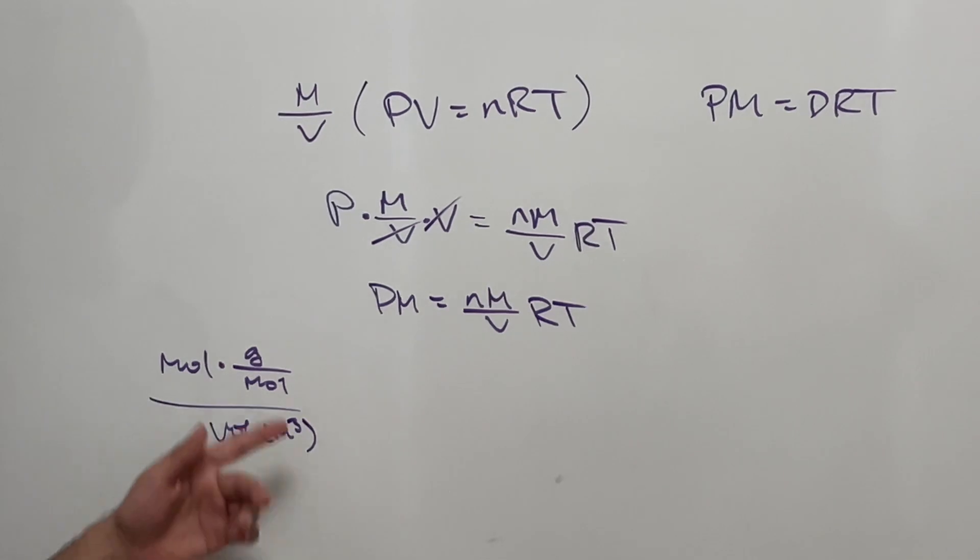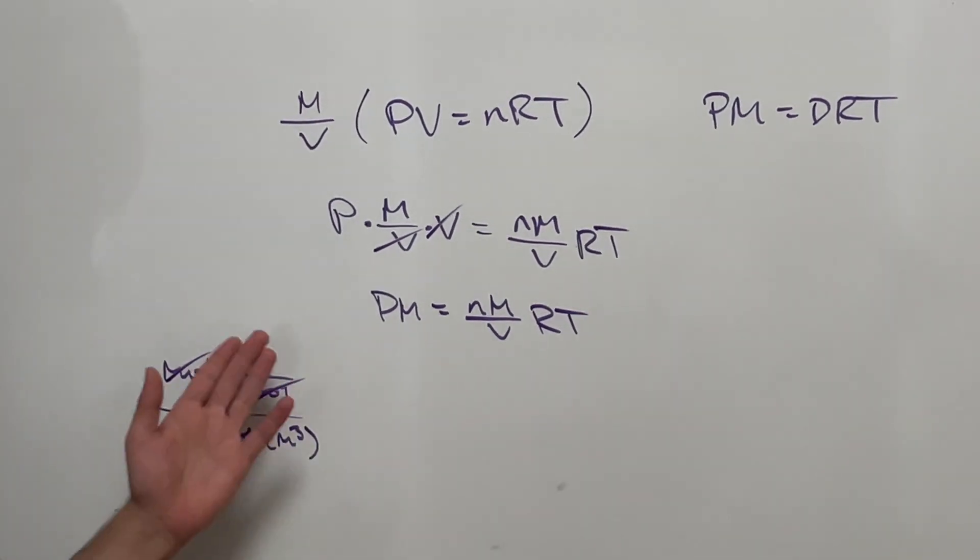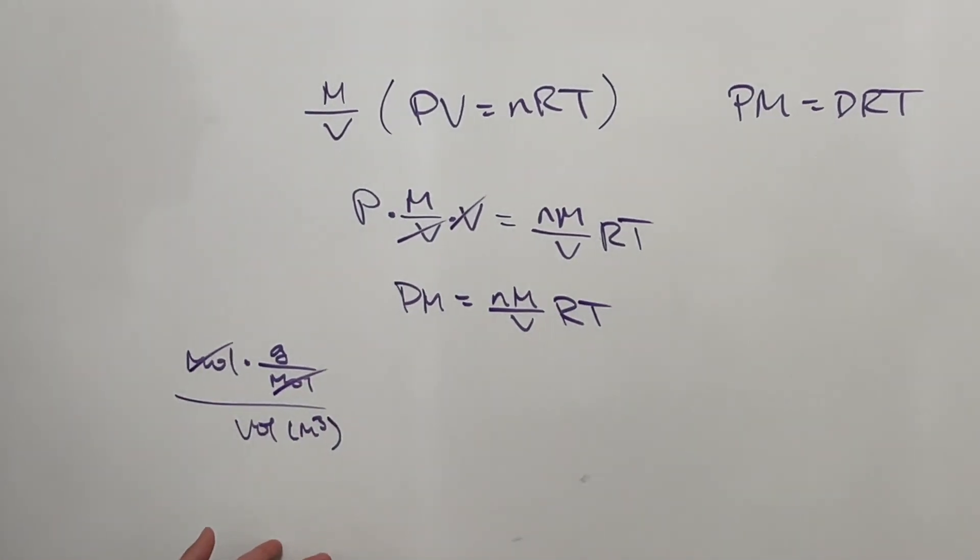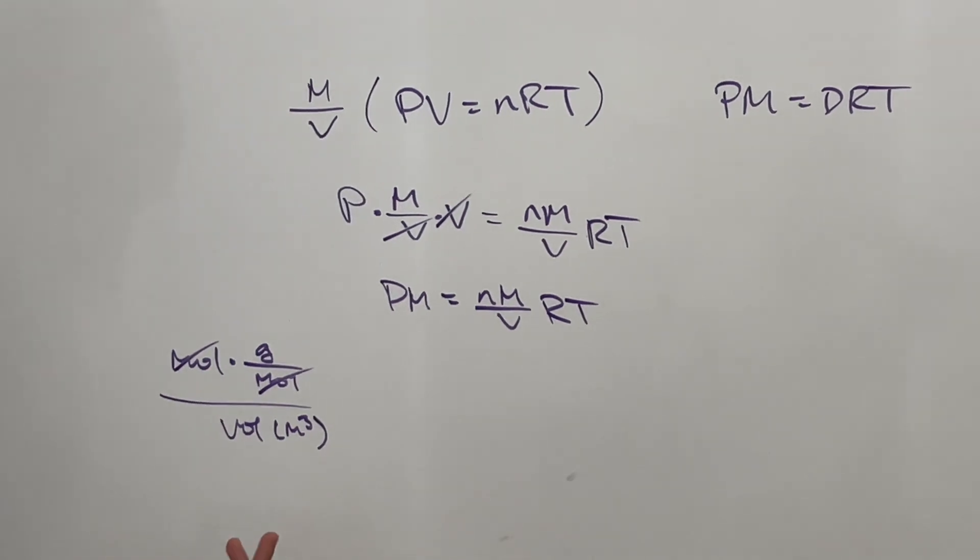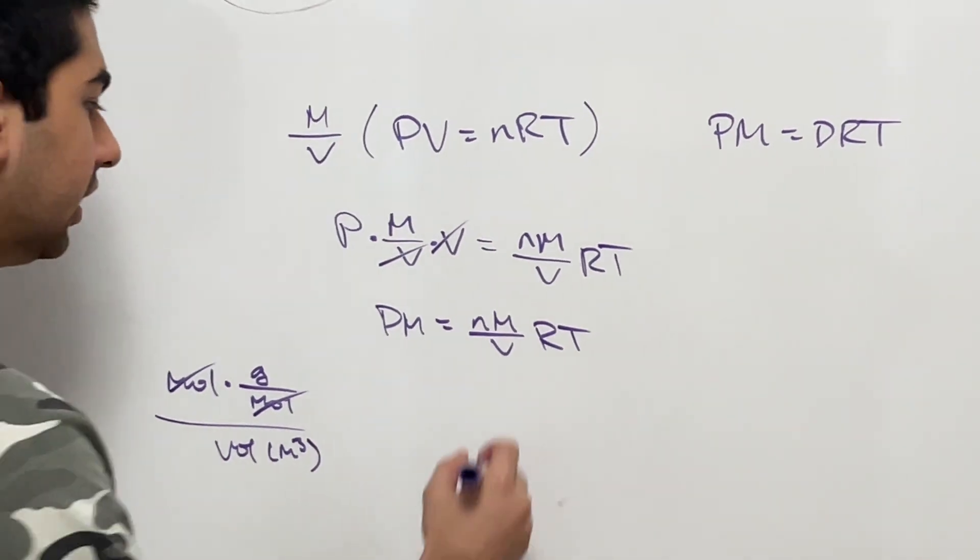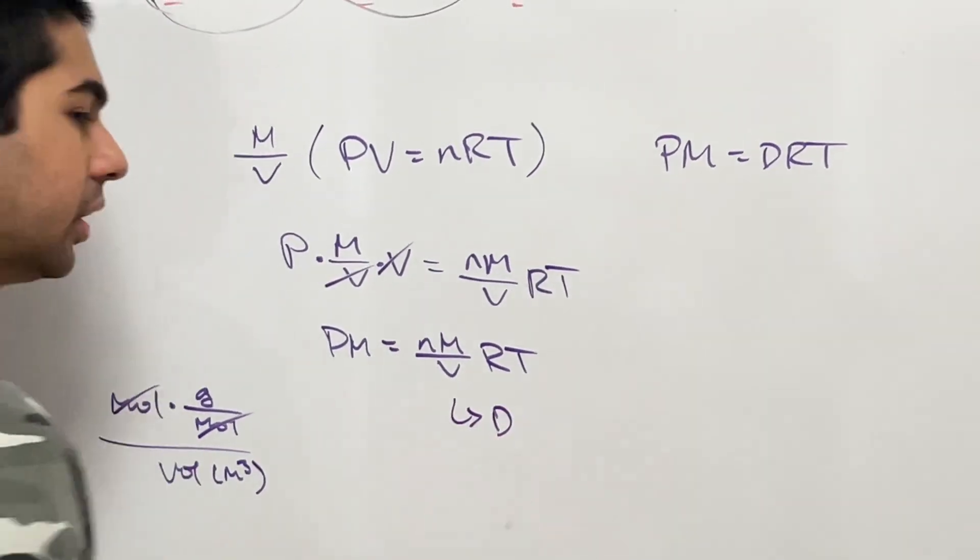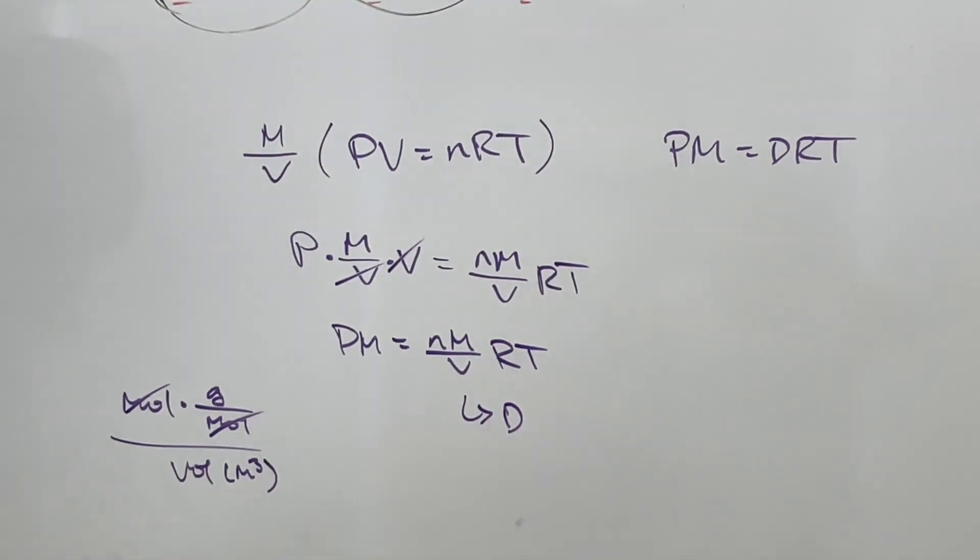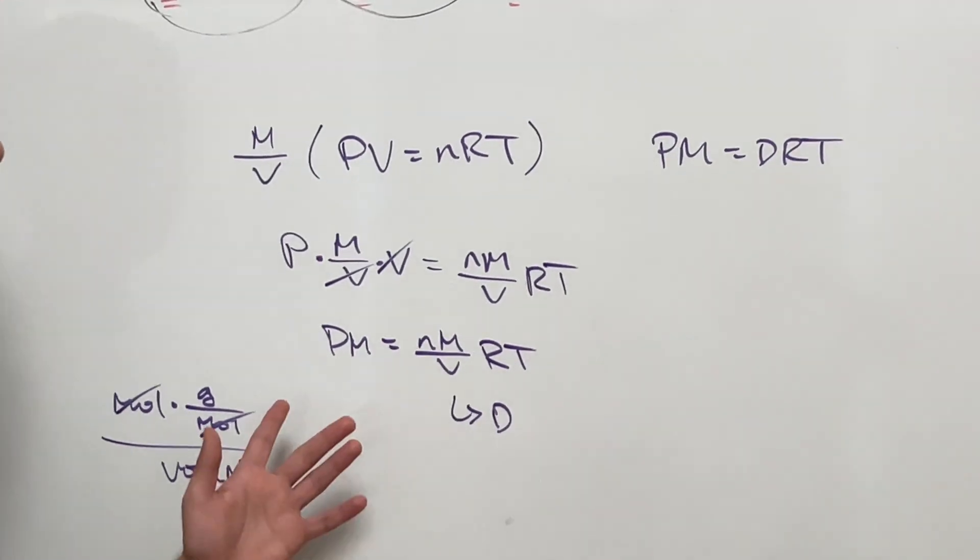Let's see here: moles here, mole here, they cancel out. We have some grams over volume, so some weight over volume. That's the density. So we get that nM over V actually comes out to be density because it's mass over volume.